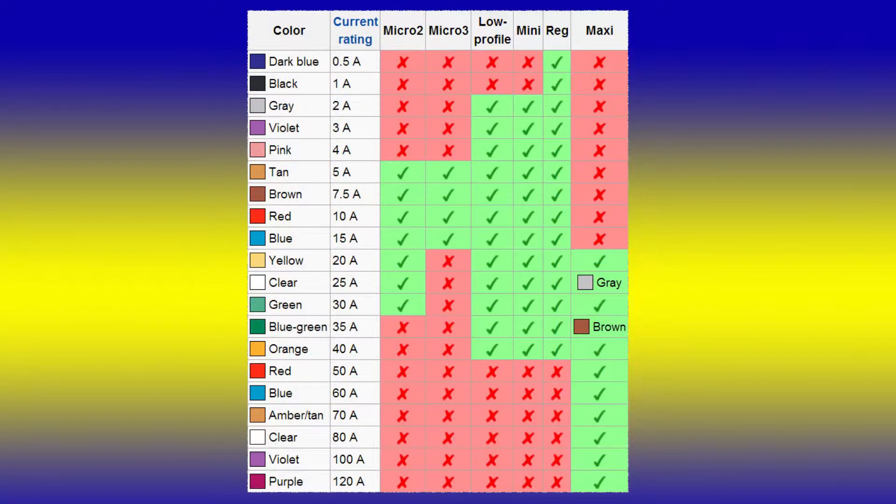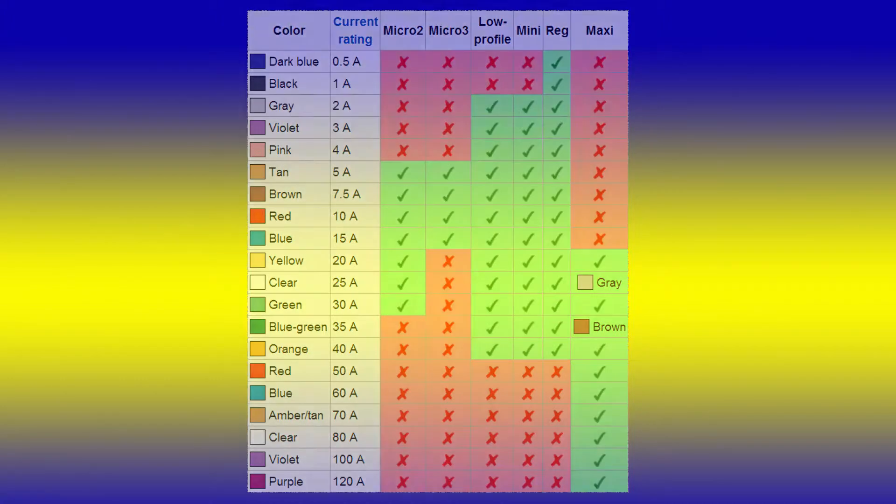The nice thing about blade fuses is they're color-coded. The Regular Fuse, or the ATO Fuse, has ratings from 0.5 amps all the way to 40 amps, whereas the Mini goes from 2 amps to 40 amps. And let's not forget the Maxi, that starts out at 20 amps and works its way up to 120 amps.